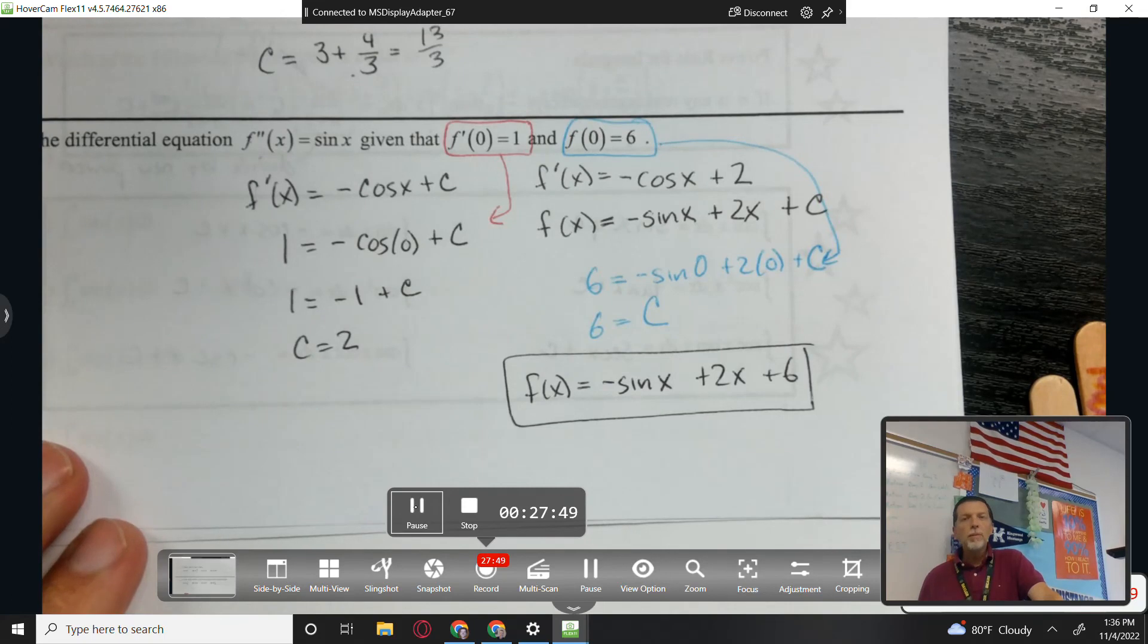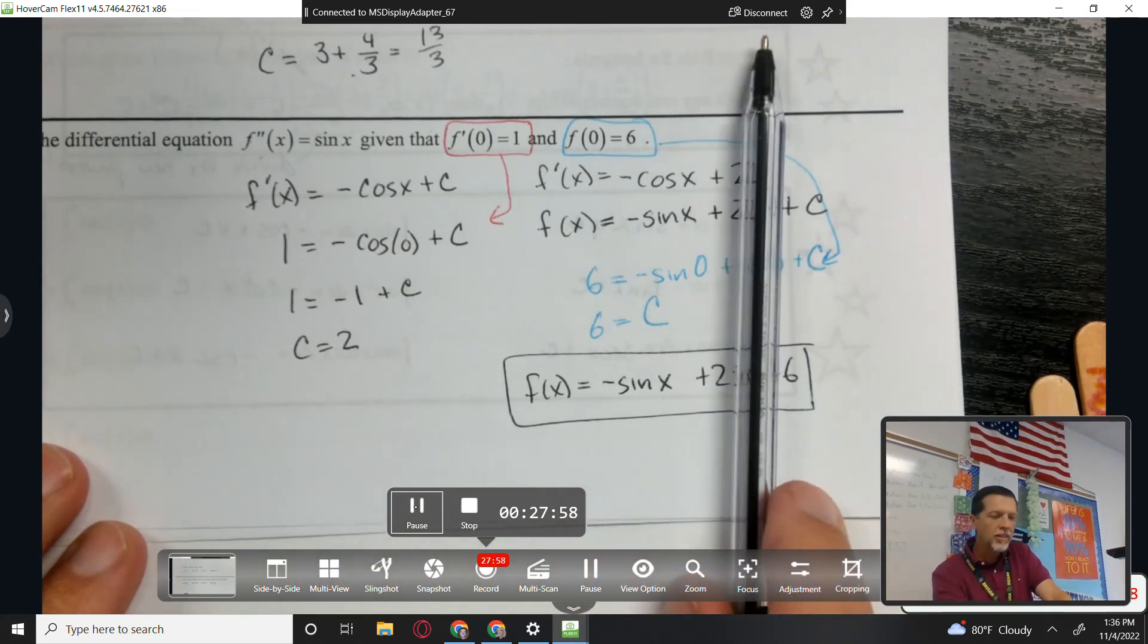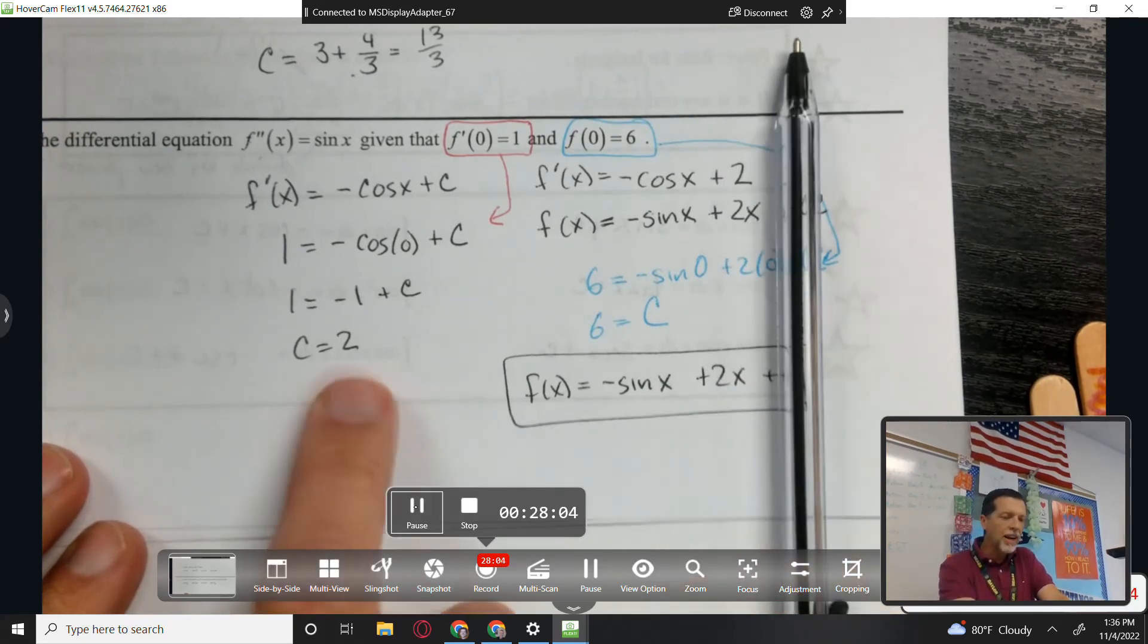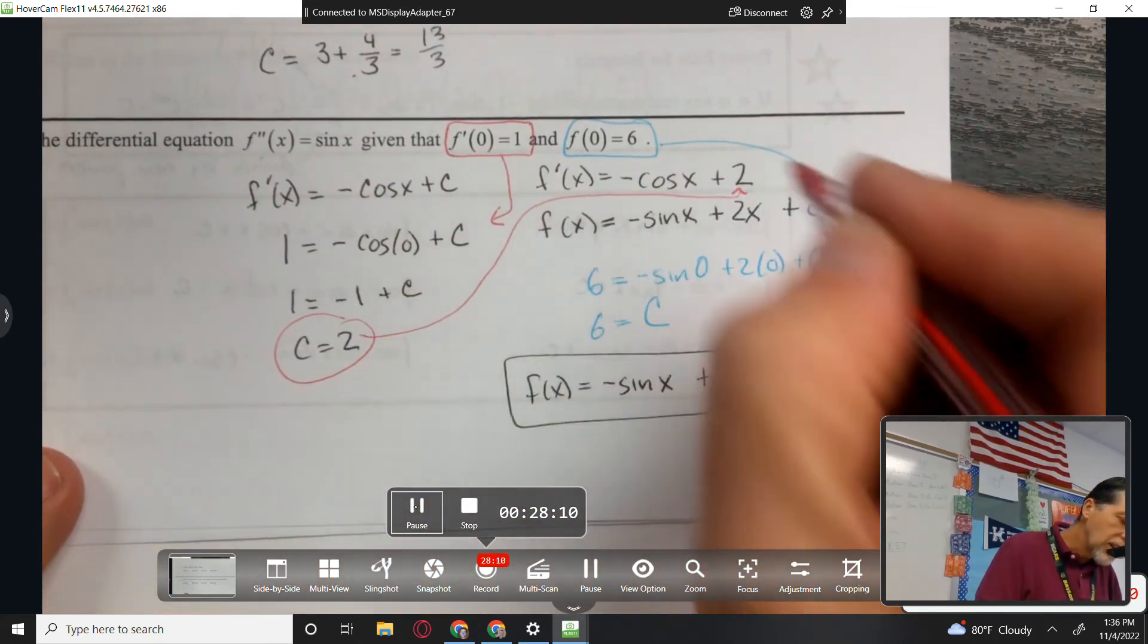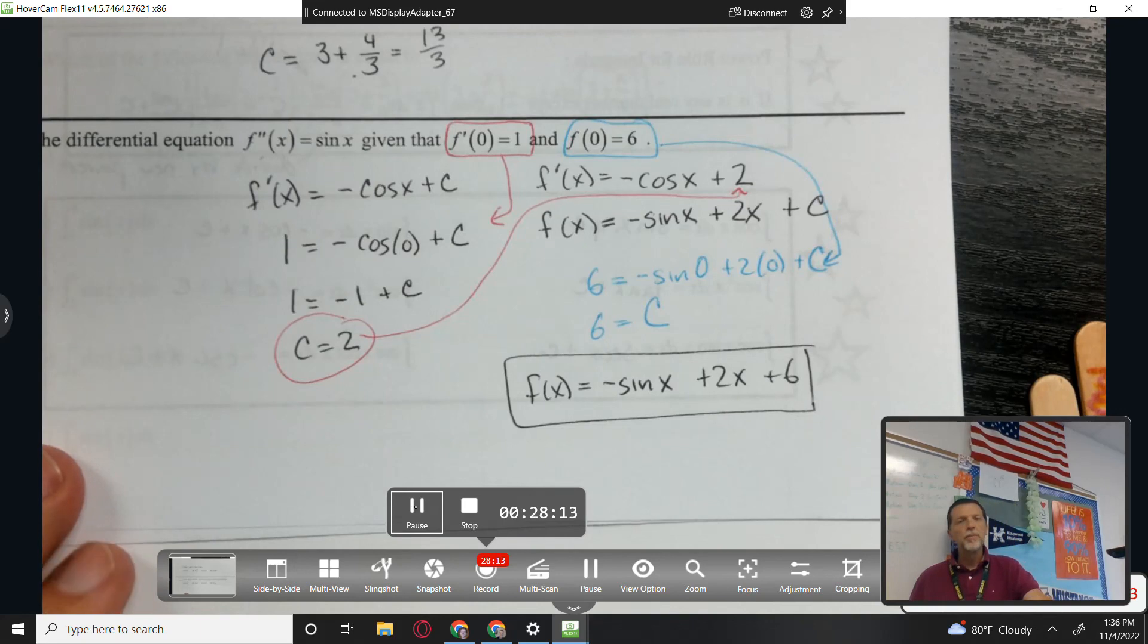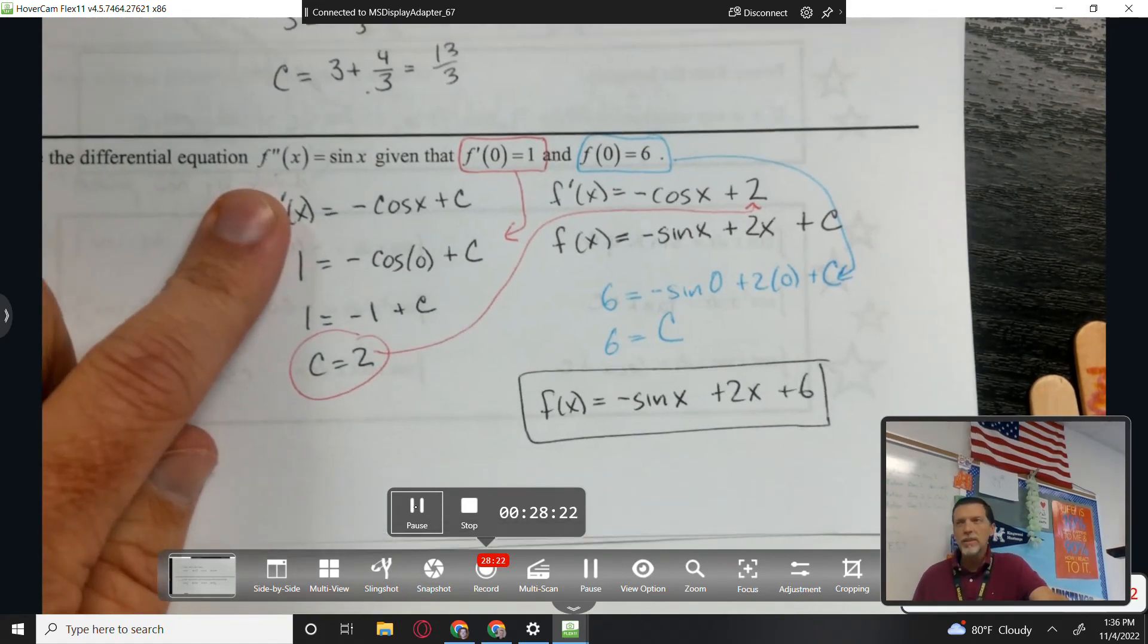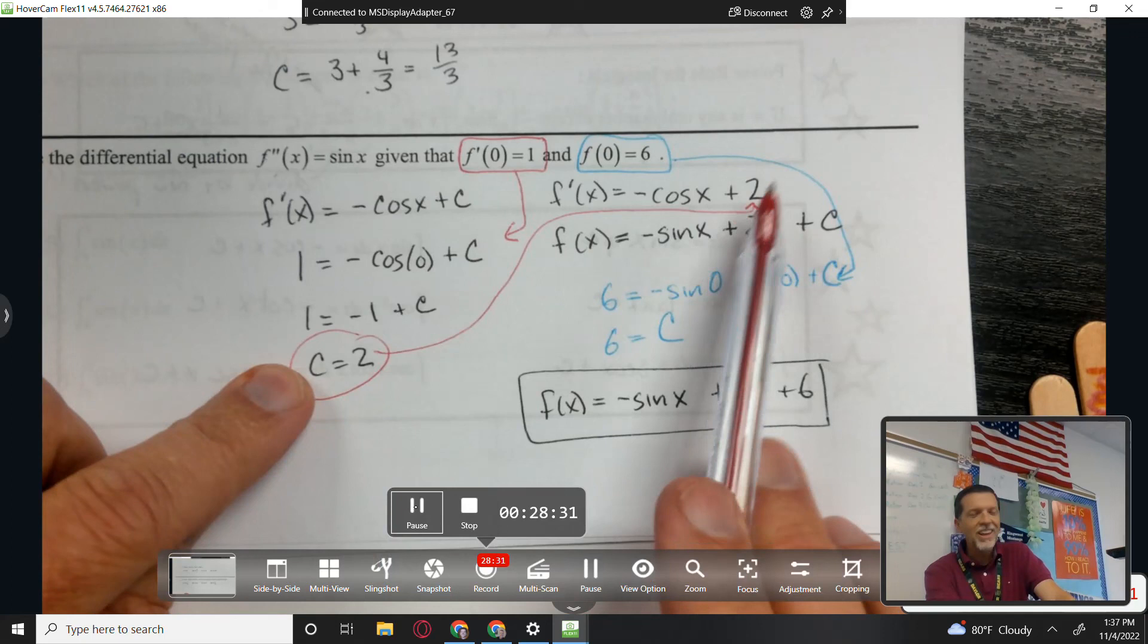What people forget to do is they'll solve for c, the first c, they'll get c equals 2, and then somehow forget to include it in their second one. And so they'll un-derivative again and get negative sine plus c, but they forgot to include this 2 as part of the answer. So they end up missing a term. I don't understand why that happens, but that's the common mistake that is made, especially the second derivative problems. So you take an un-derivative, find c, take another un-derivative, find the other c, but don't forget to include the first c in the second un-derivative process.